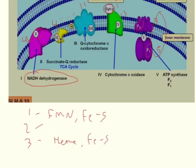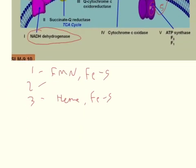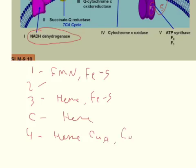And then Complex 4 uses, well let's not skip cytochrome C. So cytochrome C uses heme only. And Complex 4 uses heme and then 2 copper prosthetic groups, copper A and copper B. And these prosthetic groups are what allow the electrons to be transferred and allows it to temporarily hold onto an electron.